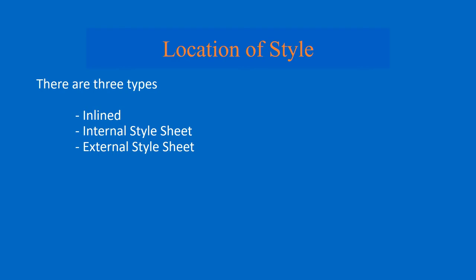Hello, in this video I will discuss about location of style. Location of style means how you can put CSS in the web page — whenever you are writing CSS, how you can add it in the web page. There are three types of location of style: the first one is called inline CSS, another is called internal style sheets, also known as document type style sheets, and the third one is external style sheets. We will see all these things one by one.